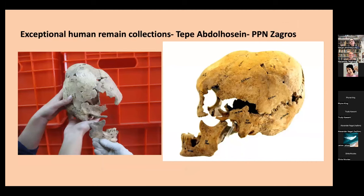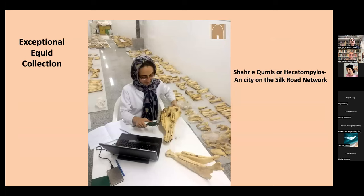Just a few pictures — there are exceptional human remains in these collections. Tepe Abdel Hussein is one of the very early Neolithic sites in Iran, and these are the types of things we found in the boxes. It resulted in a skull now being exhibited in the museum. There are also huge animal assemblages — these are equid assemblages from the site of Shahre Umis, a very important medieval site on the Silk Road networks, and we have been studying these bones for several years.